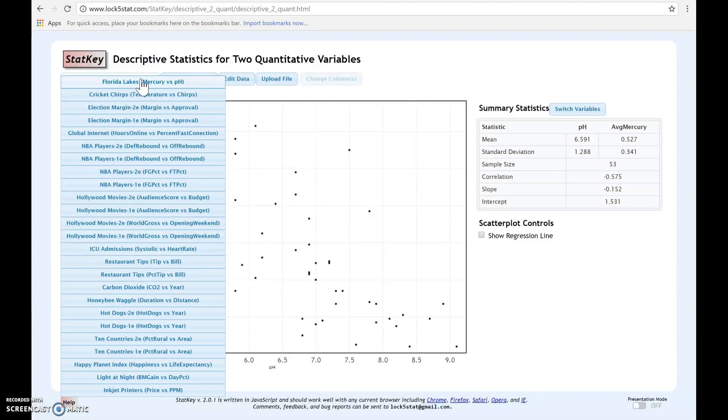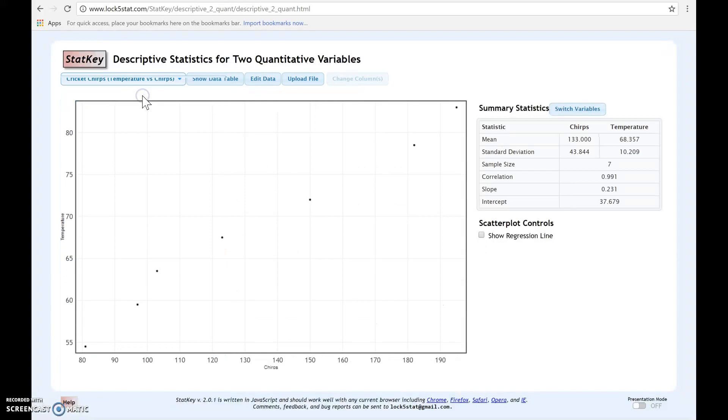If we click here, remember that one of the examples we looked at in class was the crickets chirping. So if we click here, notice here is the scatter plot for the cricket example.